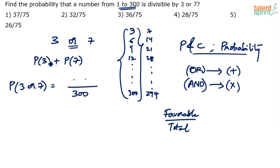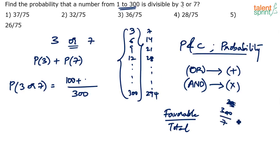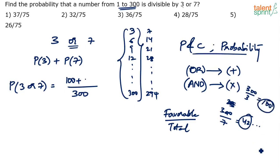What is the probability that the number is a multiple of 3? There are 100 such multiples: 3, 6, 9, 12 and so on up to 300 — 100 multiples. How many multiples of 7? 7, 14, 21, 28 and so on up to 294. Divide 300 by 7 — you get 42 point something, specifically 42.8571. So there are 42 complete multiples of 7. When I divide 300 by 3, I get exactly 100 multiples of 3.